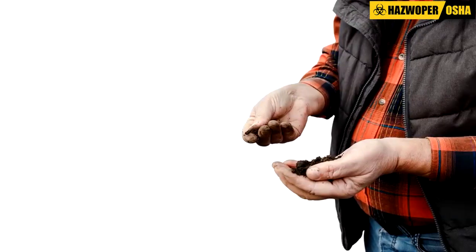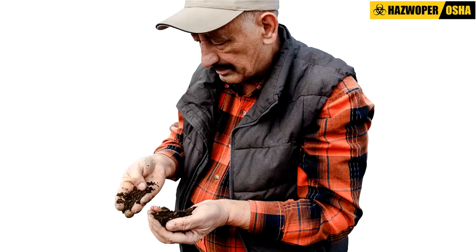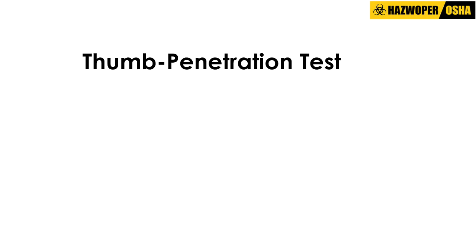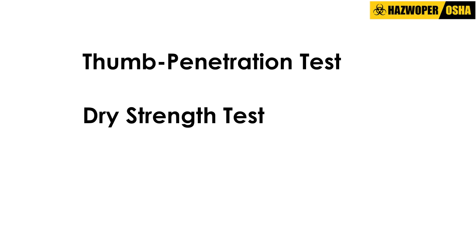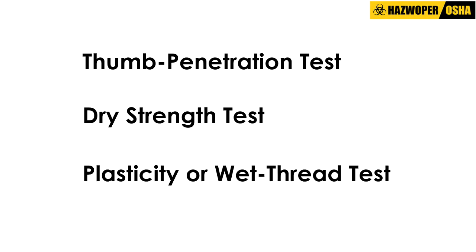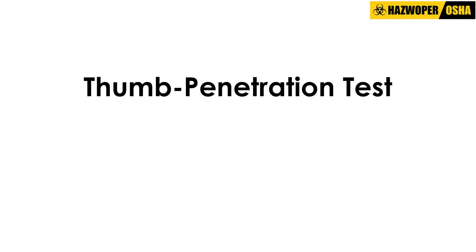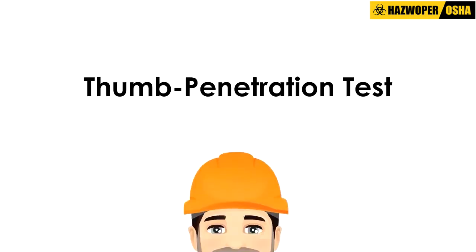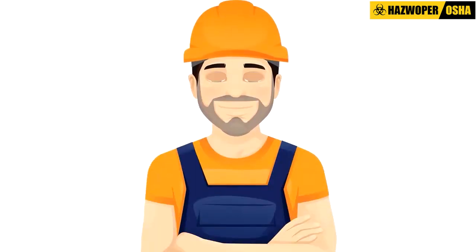For manual testing, there are three main types of manual tests a competent person may use to determine the soil class: the thumb penetration test, the dry strength test, and the plasticity or wet thread test.